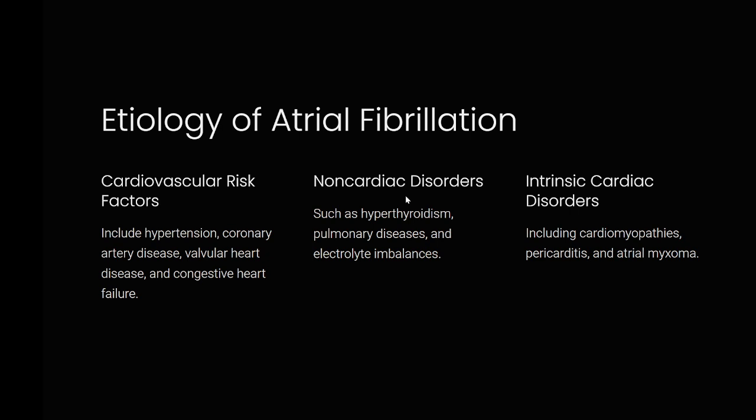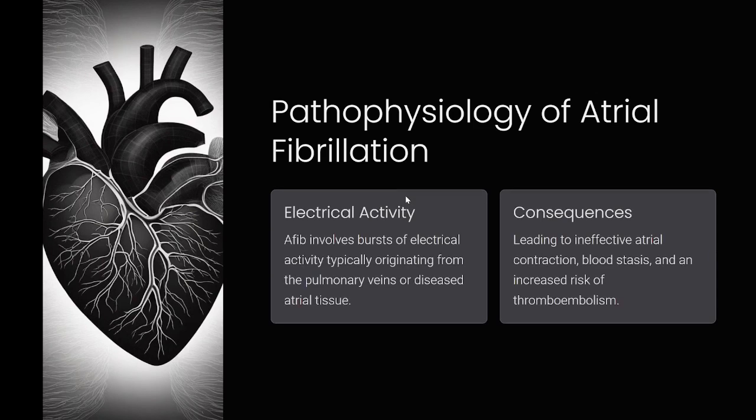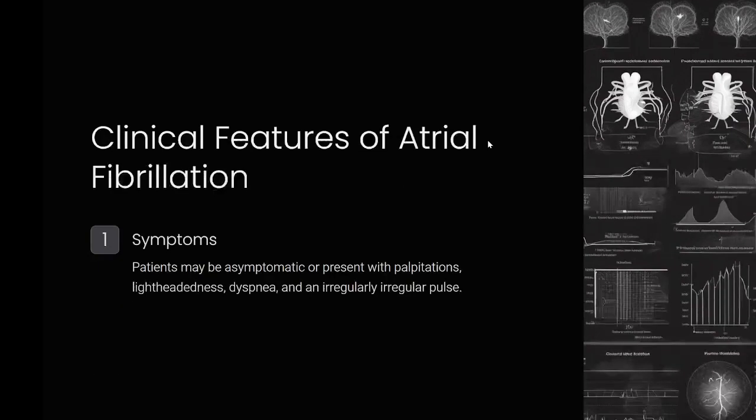Pathophysiology: AFib involves bursts of electrical activity typically originating from the pulmonary veins or diseased atrial tissue, leading to ineffective atrial contraction, blood stasis, and an increased risk of thromboembolism. Clinical features: patients may be asymptomatic or present with palpitations, lightheadedness, dyspnea, and an irregularly irregular pulse.